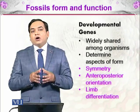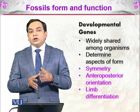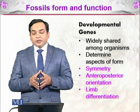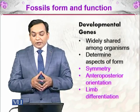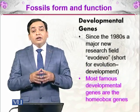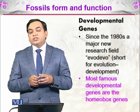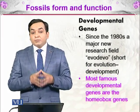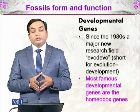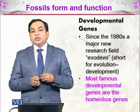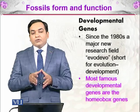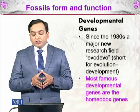Developmental genes are conserved across the animal kingdom and are widely shared among organisms. They determine aspects of form, symmetry, anterior-posterior orientation, and limb differentiation. Although developmental genes were discovered earlier, major research in the 1980s gave rise to an entire field called evolutionary developmental biology, or evo-devo. The most famous developmental genes in this field are the homeobox genes.